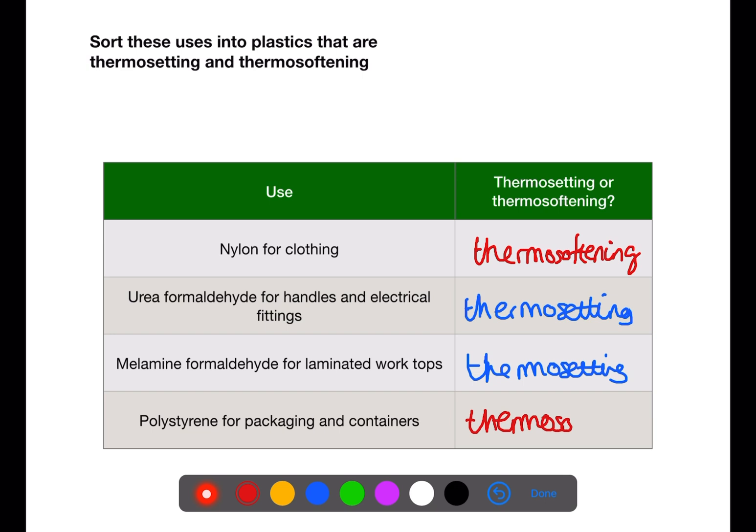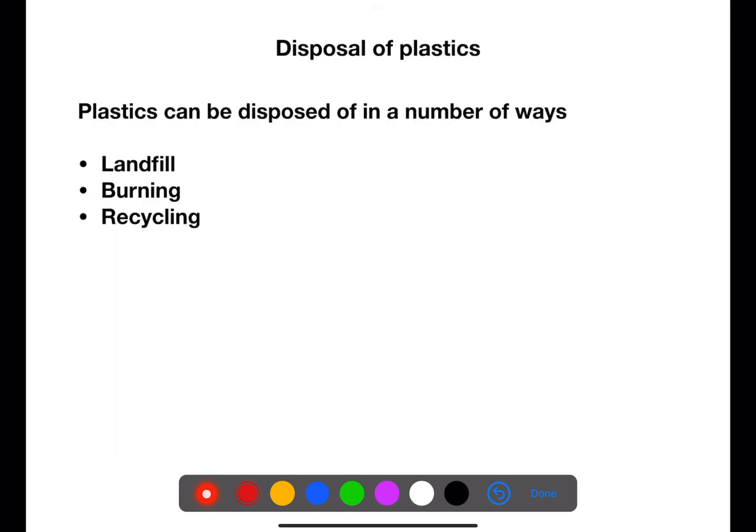Plastics are an important substance. They are made from chemicals derived from oil, which means that we should try to minimize our use of plastics. Where this is not possible, we should then try to reuse plastics. Again, where this is not possible, there are different ways to dispose of plastics. Plastics can be disposed in landfill, by burning, or by recycling.